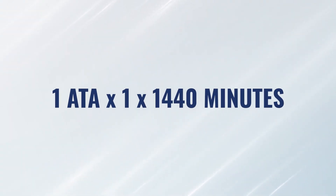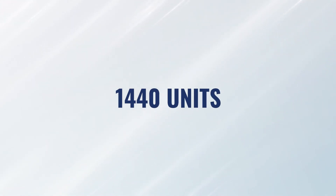In order to get full-blown oxygen toxicity, that would be 1,440 units in a day. How do we get that number? That would be breathing at 1 ATA — normal atmospheric pressure — on 100% oxygen. So 1 times 1 times how many minutes are in a day: 1,440. So 1 ATA times 100% oxygen times 1,440 minutes equals 1,440 units — full-blown oxygen toxicity. That's why patients with COPD on oxygen 24 hours a day are not getting 100% oxygen through a mask; they're getting two to four liters through a cannula to avoid further lung damage.